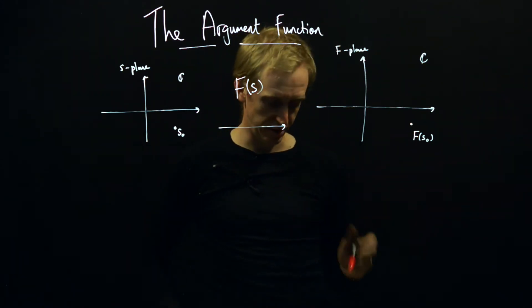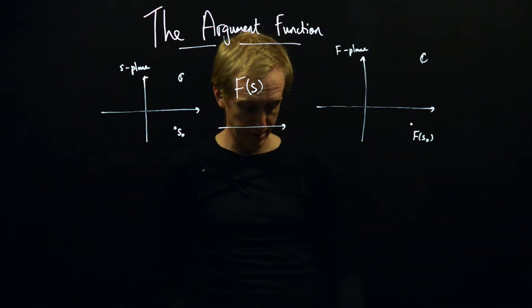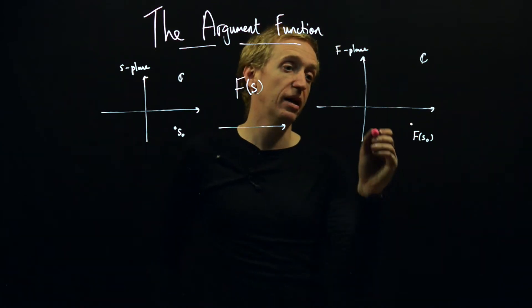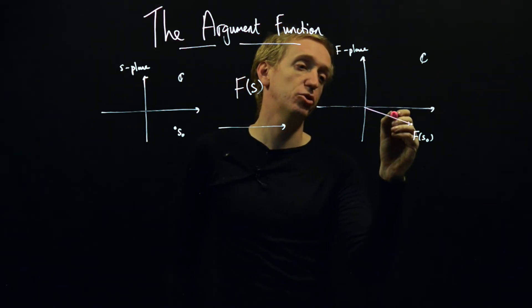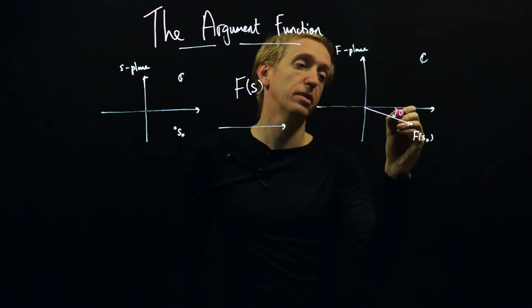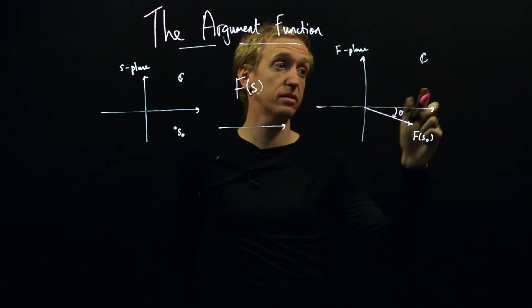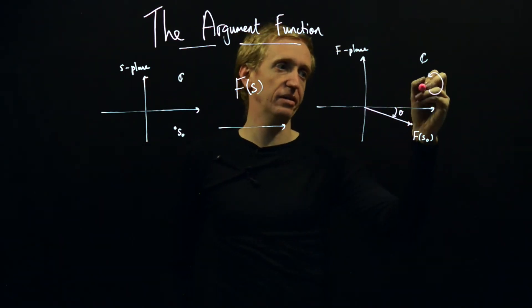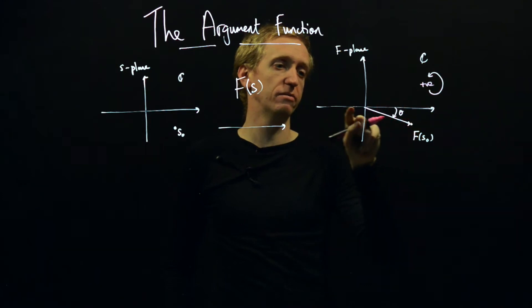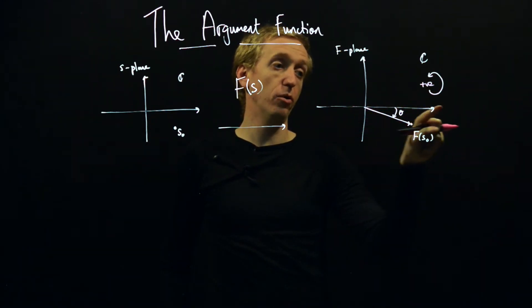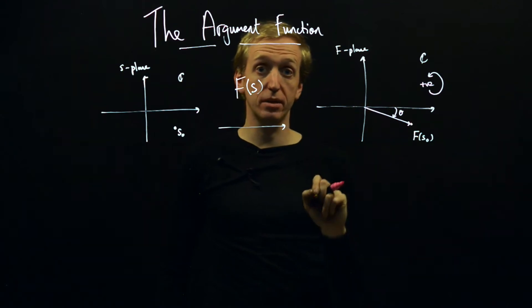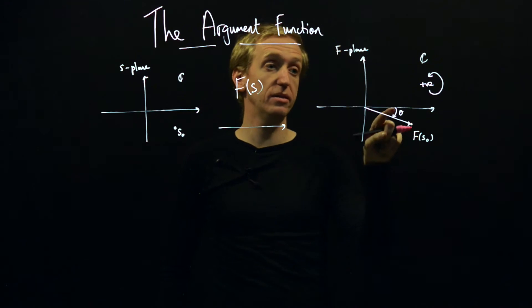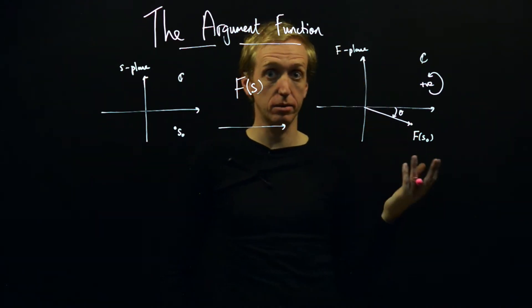How about arguments? Quick recap: here, argument refers to the argument of complex numbers. The argument of a complex number is just the angle it makes with the positive real axis, and you measure positive arguments in the anti-clockwise direction. The convention is that a number on the positive real axis has argument zero, and as you move around anti-clockwise the argument increases — here it's pi over 2, pi, and so on.